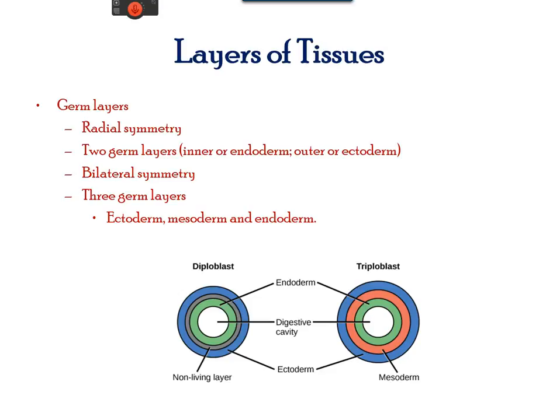Animals undergo embryonic development which dictates their appearance. During embryonic development, a hollow cluster of cells forms and reorganizes into germ layers. There are three germ layers in bilaterally symmetrical animals and two germ layers in radially symmetrical animals. Each layer develops into a specific set of tissues and organs.